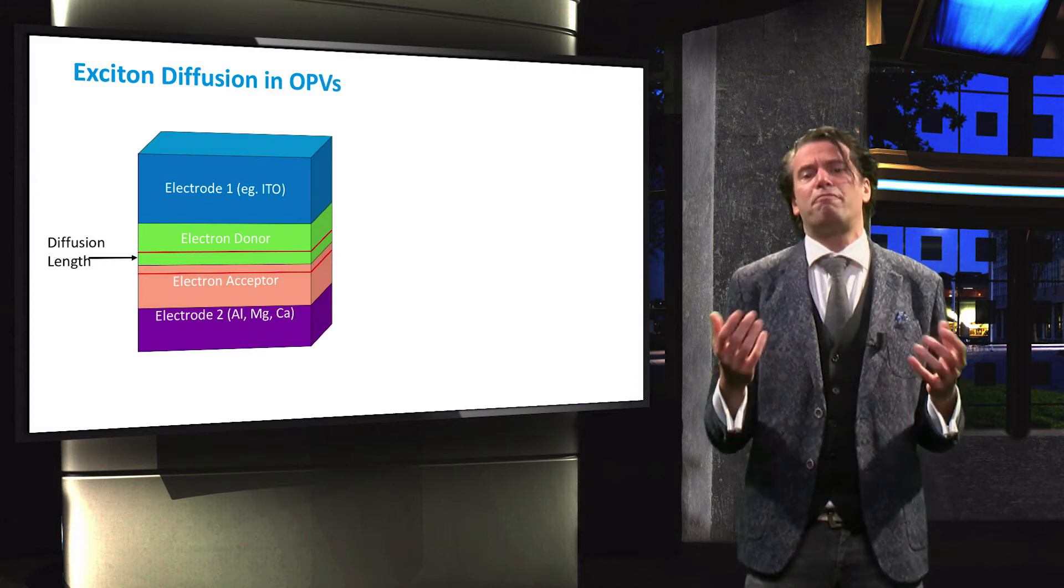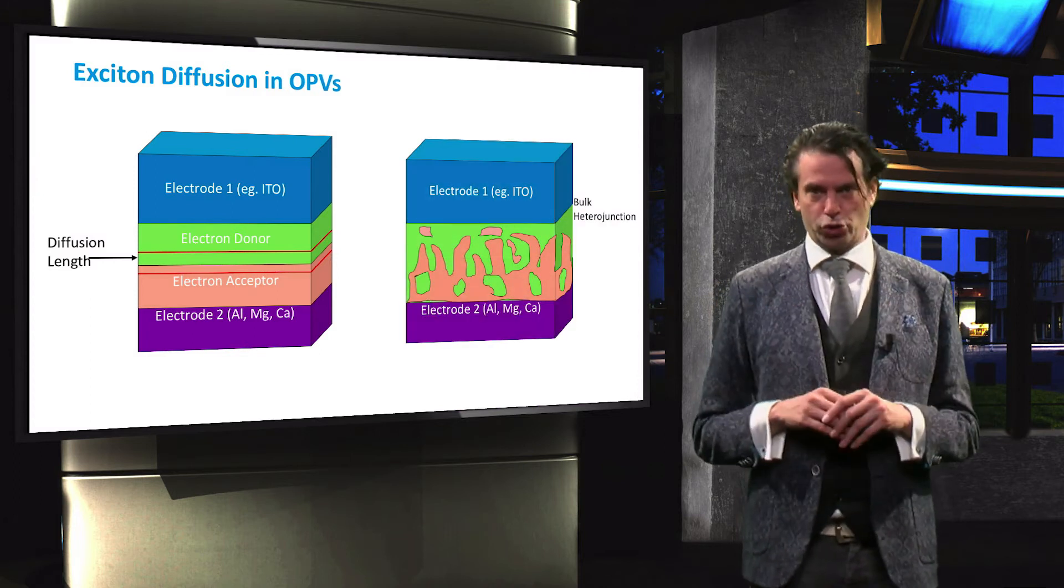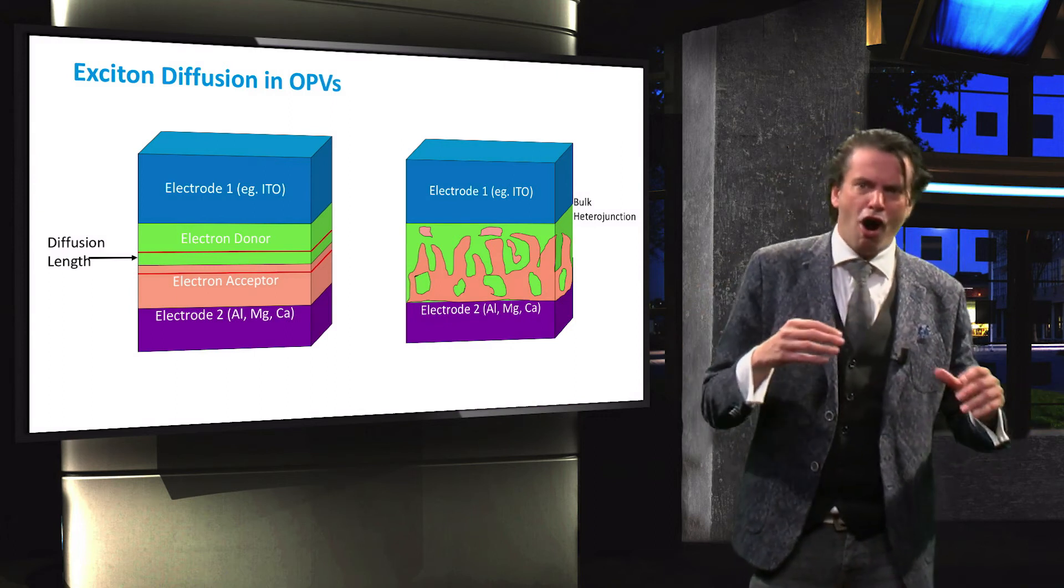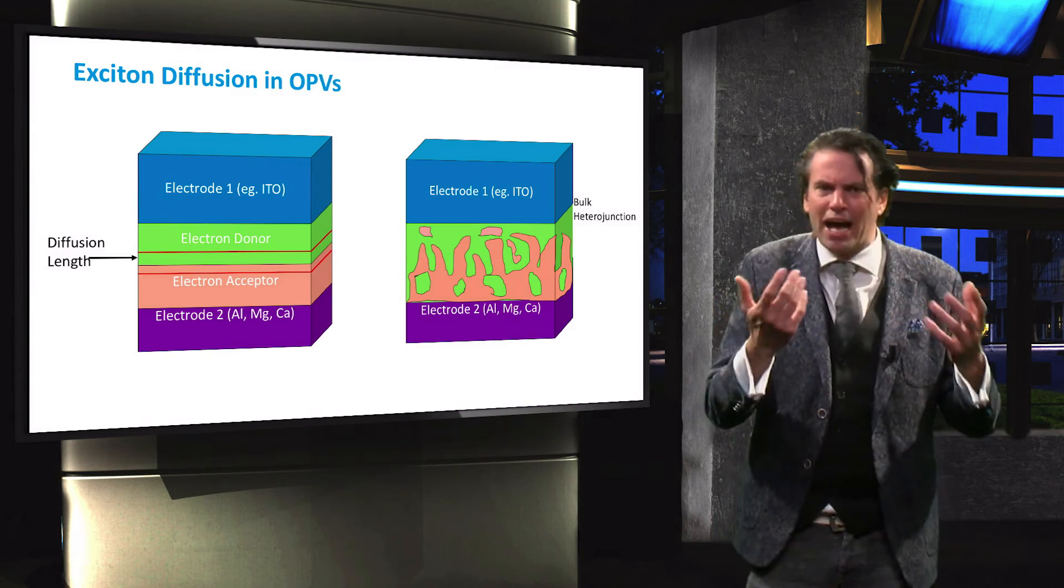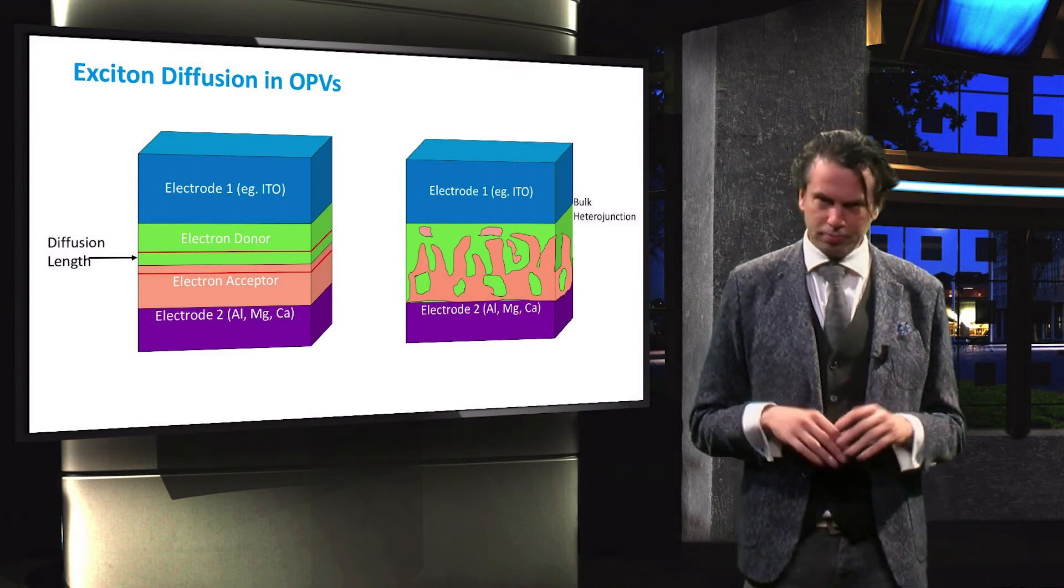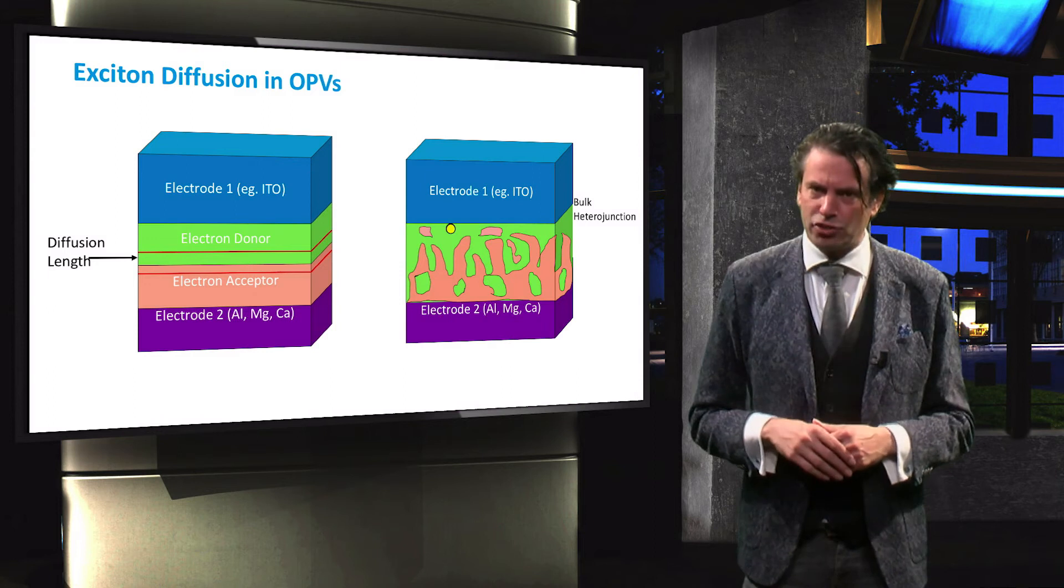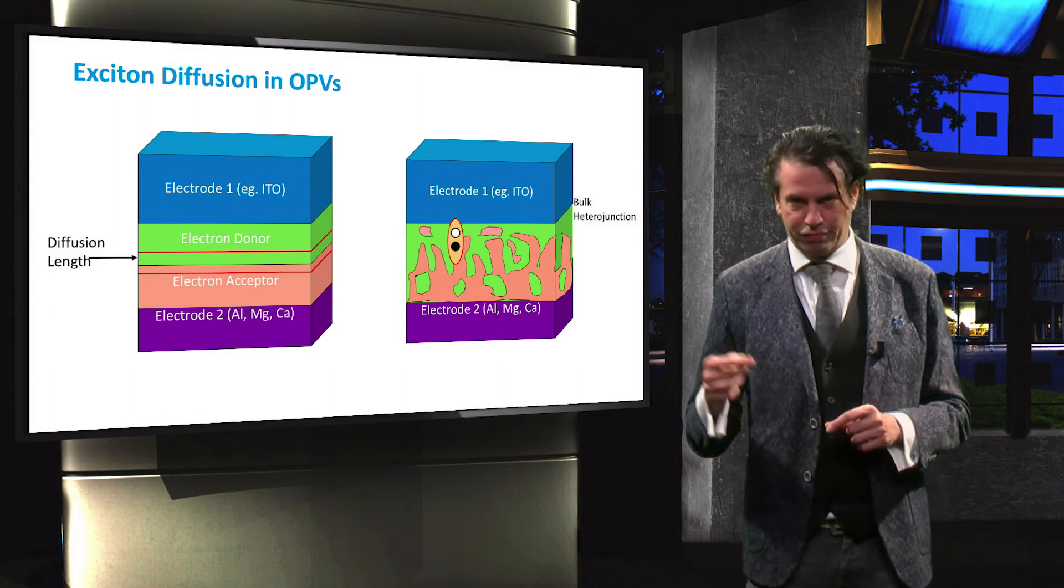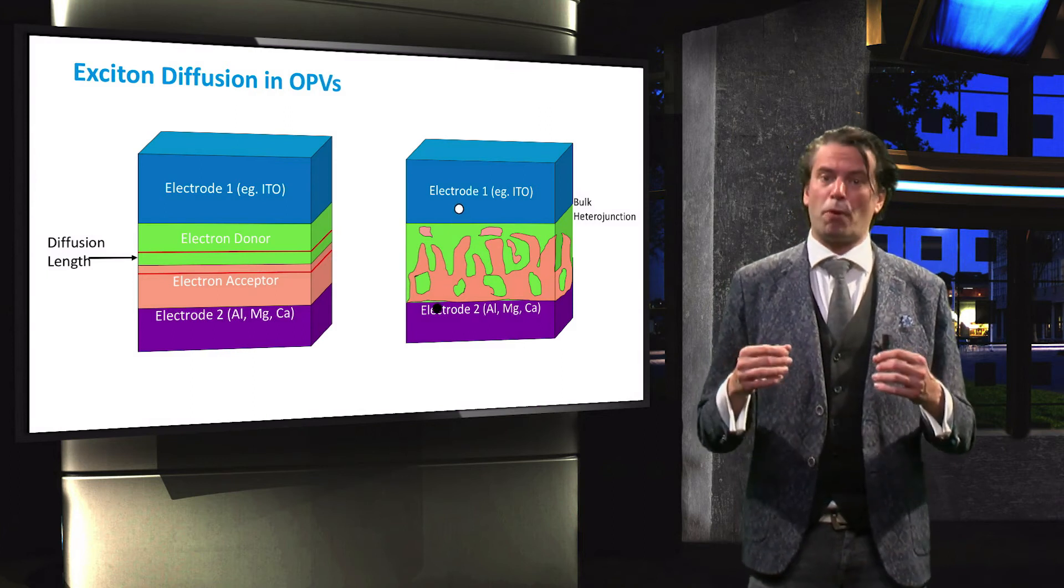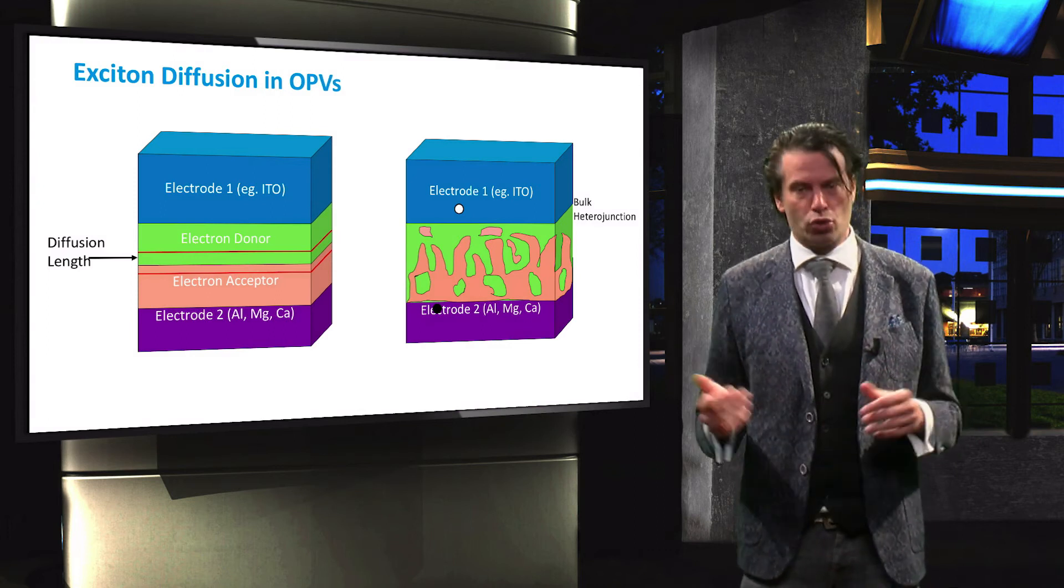In order to reduce the effective path length of these excitons, a so-called bulk heterojunction solar cell is used in which the electron donor and acceptor material form a blend instead of two distinct well-defined layers as shown on the left. This reduces the path length of an exciton before reaching a donor-acceptor interface, thereby effectively reducing the probability of recombination and increasing the quantum efficiency of the solar cell.